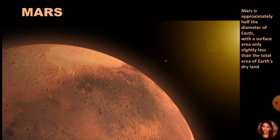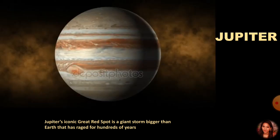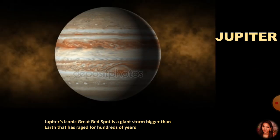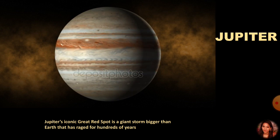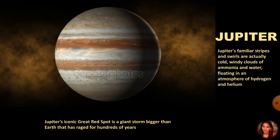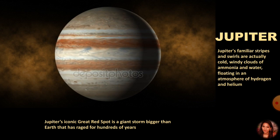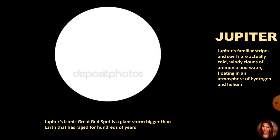Now it is Jupiter. Jupiter's iconic Great Red Spot is a giant storm bigger than Earth that has raged for hundreds of years. Jupiter's familiar stripes and swirls are actually cold, windy clouds of ammonia and water floating in an atmosphere of hydrogen and helium. Jupiter is the largest planet of the solar system. It is so large that about 1,300 Earths can be placed inside this giant planet.